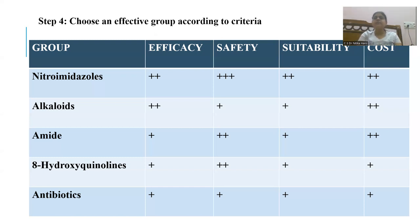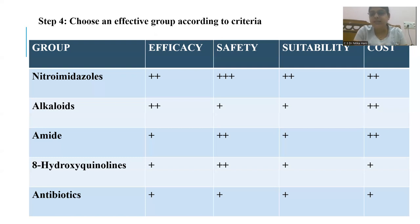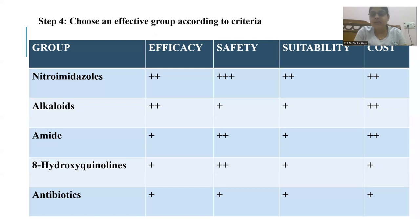The alkaloid group of drugs are less safe — they can cause very serious side effects. They are efficacious but less safe and less suitable compared to the nitroimidazole group, though they are price-beneficial. The amides, hydroxyquinolines, and antibiotics are effective mainly in chronic cases — for the carrier state or chronic amoebic dysentery — and are less effective compared to nitroimidazoles and alkaloids.